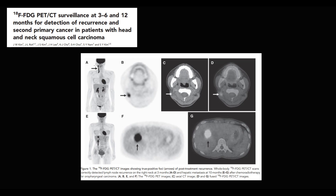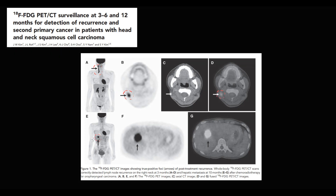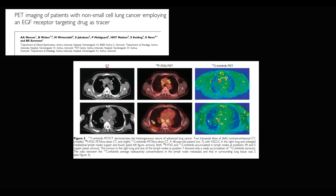On PET-CT, cancer tissue appears very bright while normal tissues show only mild intensity. In a real-life PET-CT of a patient with cancer, the intensity of the right side of the neck is substantially higher than the left side, due to proliferation of cancer cells. In another image, an area of high intensity in the liver corresponds to hepatic metastasis, visible in multiple projections. Comparing CT with PET-CT in a patient with lung cancer shows that CT alone is ambiguous, but adding radiotracer in PET-CT makes the presence of cancer cells very clear.